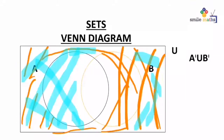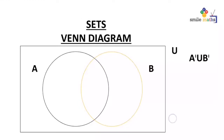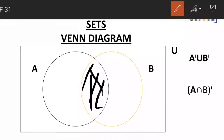Now let's continue and look at our next one: A intersection B, complement. Let's look at the bracket first — the bracket says A intersection B. Let's shade the bracket first with a different color, the black color. So this is our A intersection B, and we are talking of the complement of that. The complement of something means elements which are outside that circle or outside that space.